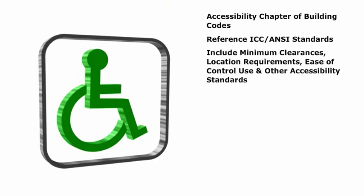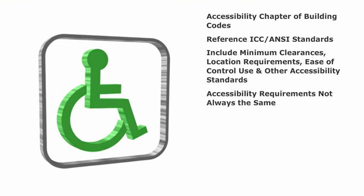When used together, they include such things as minimum clearances, location requirements, ease of control use, and other accessibility standards. These accessibility requirements are discussed in this course as they apply to various plumbing fixtures, plumbing facilities, and other related items. Note, however, that the accessibility requirements in each document are not always the same.